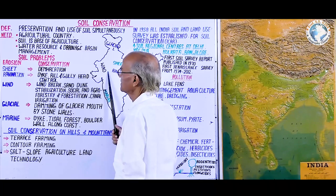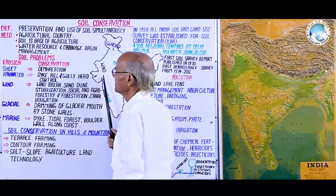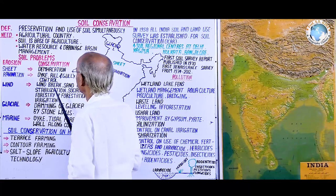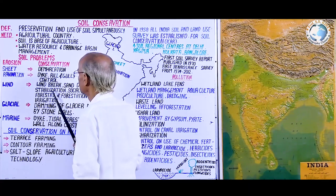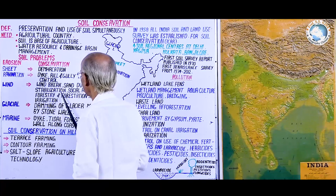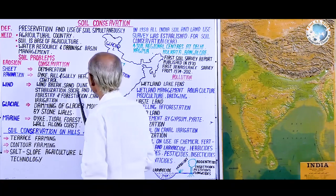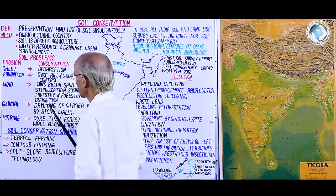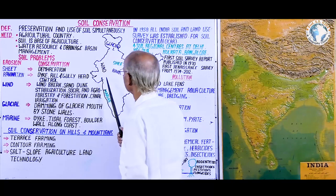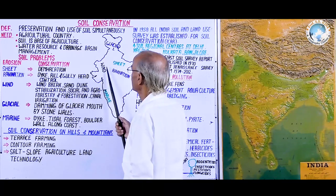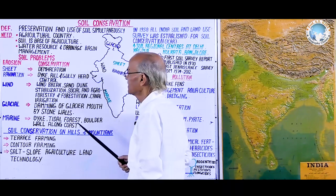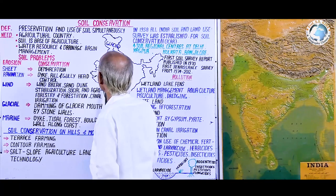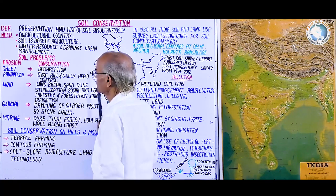Next is wind erosion, found in the western part of India especially in the Thar Desert. Here fertile soil is being deflated and removed from one place to another. For its conservation, windbreaks, sand dune stabilization, drip irrigation, agroforestry, afforestation, and canal irrigation are the measures practiced, especially the Indira Canal in the western part of Rajasthan.